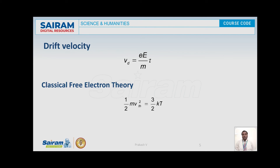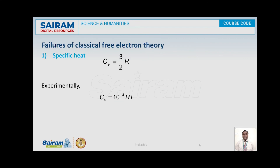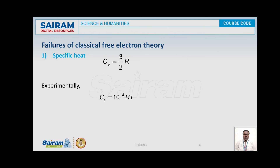Now I am going to explain the failures of classical free electron theory. Even though the classical free electron theory is successful in explaining electrical conductivity, thermal conductivity, and other concepts, it fails to explain: specific heat, the temperature dependence of electrical conductivity sigma, and the dependence of electrical conductivity on electron concentration. These three are the key failures of this theory.